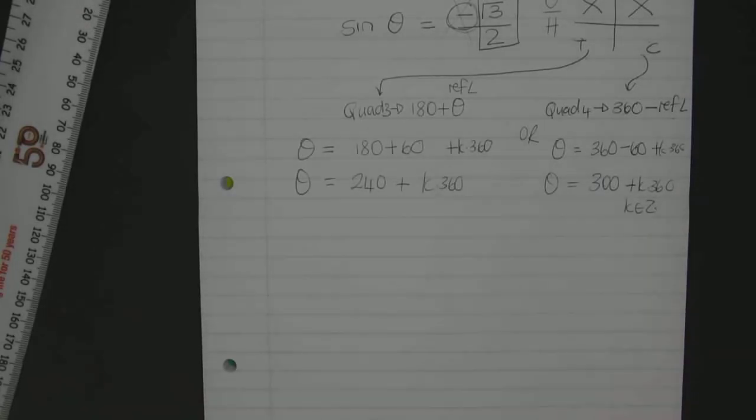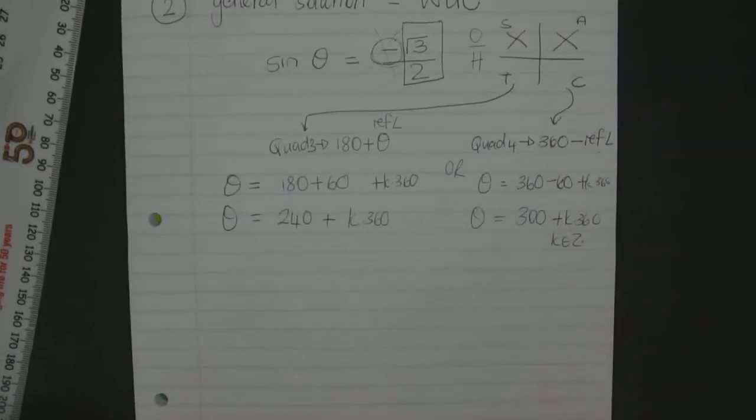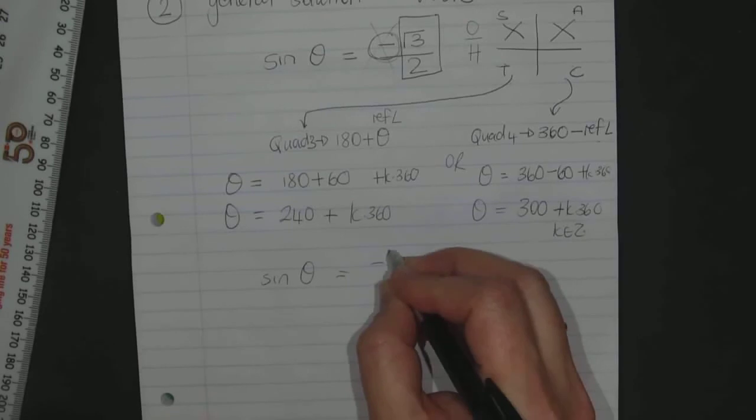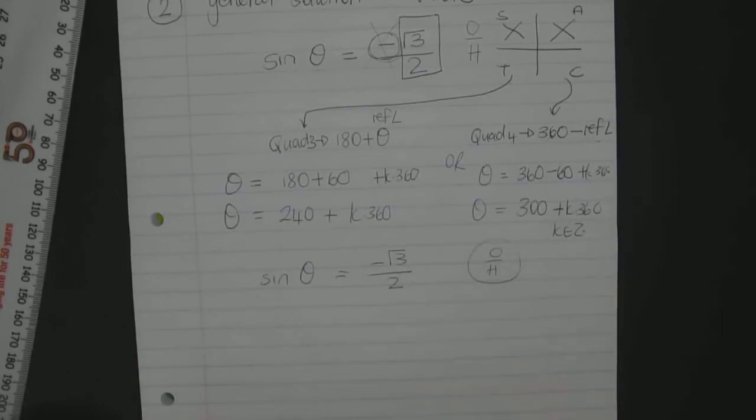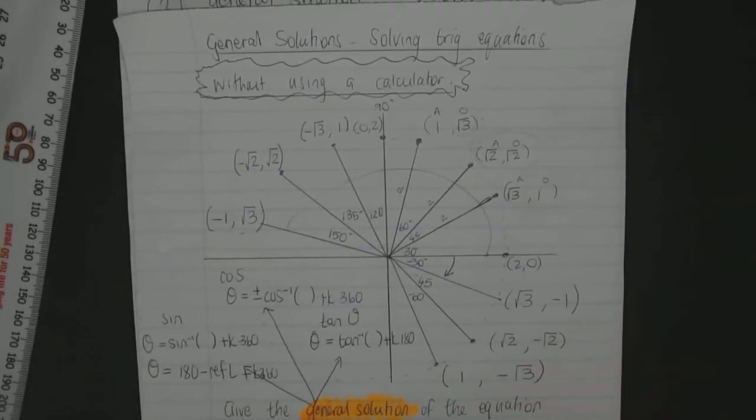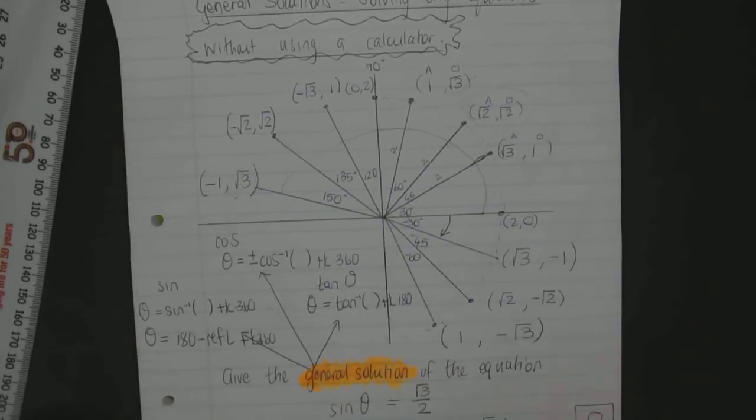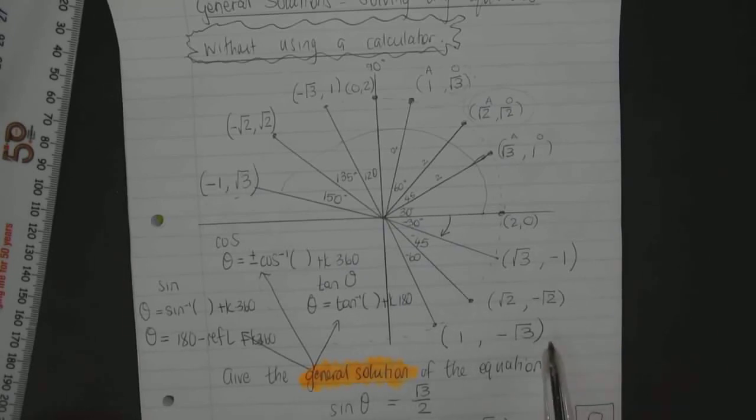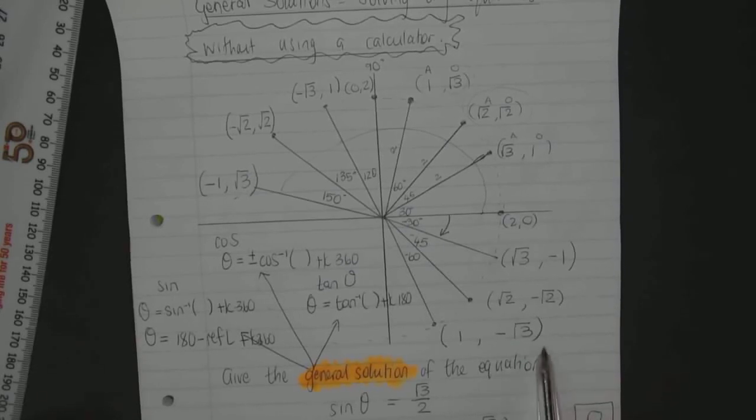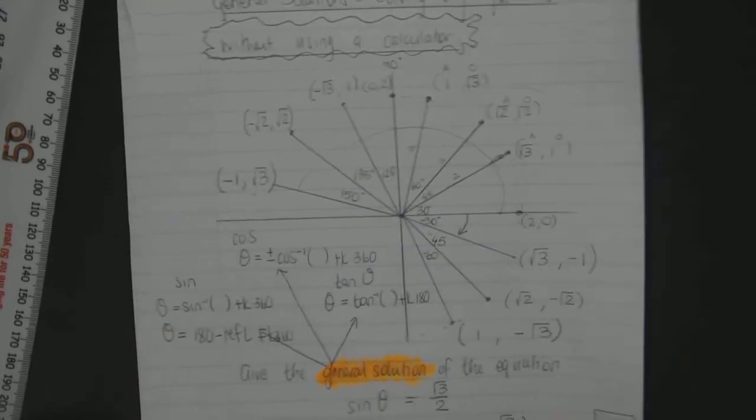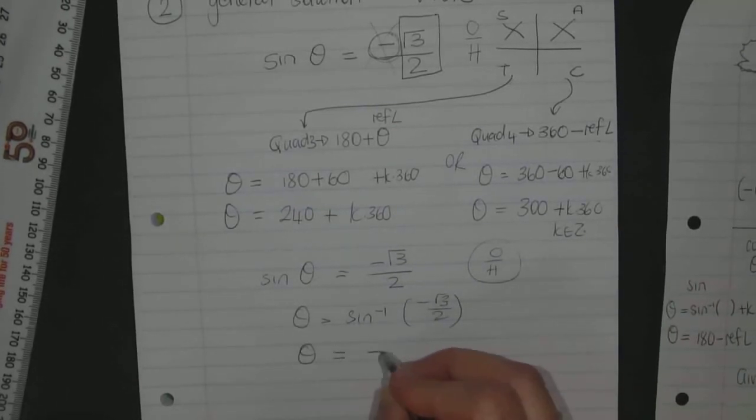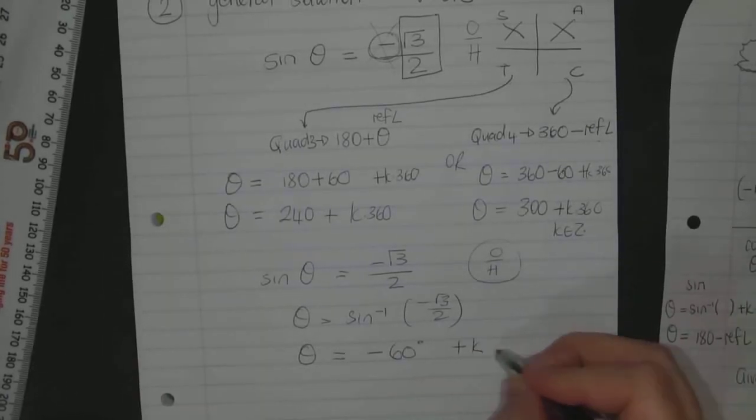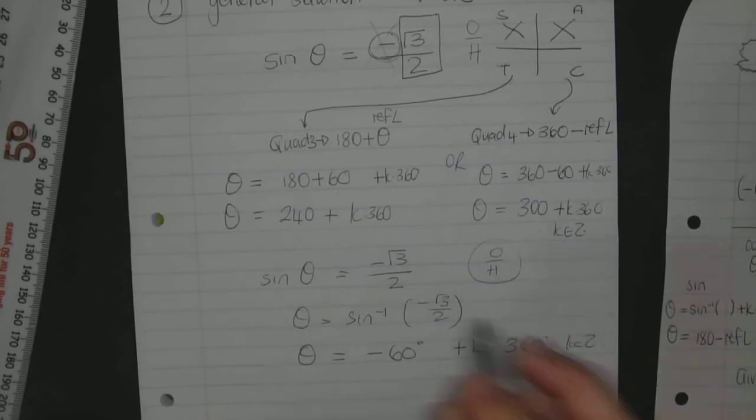So let's see. If I had to use my first method to do this question. So the same question. So sine theta is equal to minus square root 3 over 2. So I know I have O over H. So I need to find where my O value is negative square root 3. Where do you see that? At negative 60. Do you see that? So when I have theta is equal to the inverse of sine minus square root 3 over 2, I get minus 60. But it's K times 360. And K is part of integers. That's my first one.